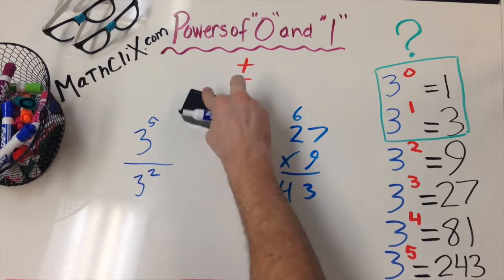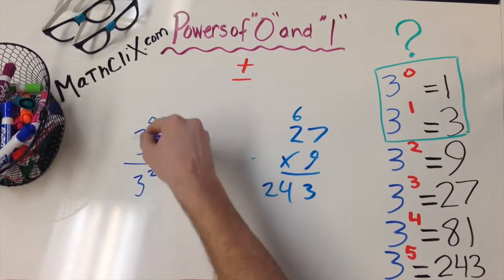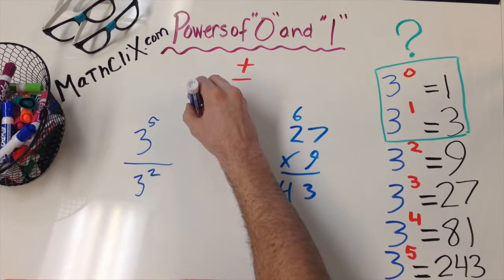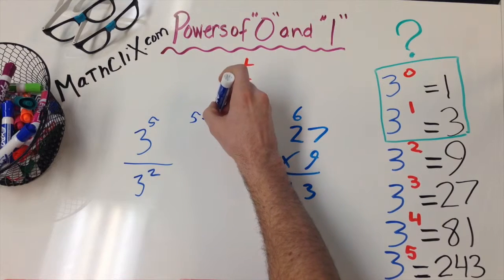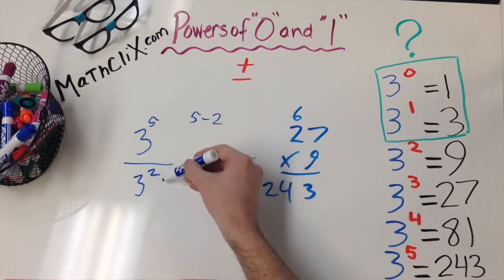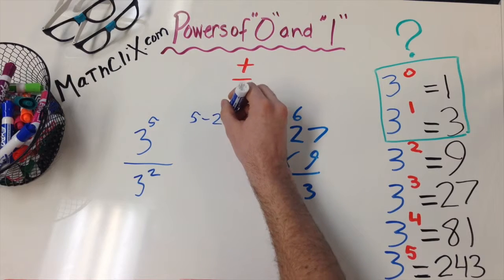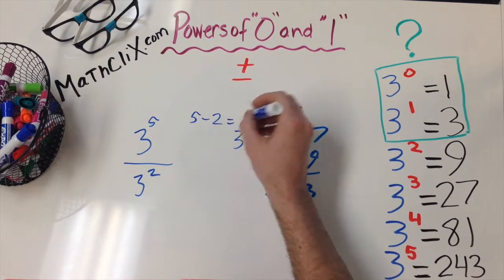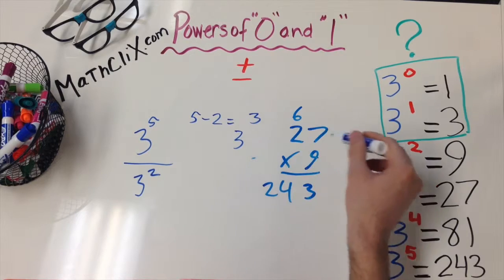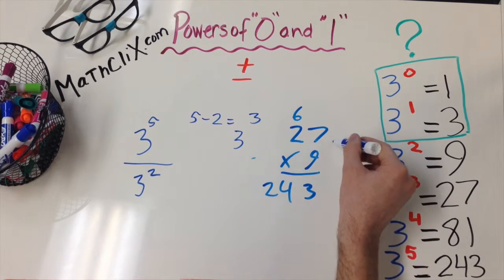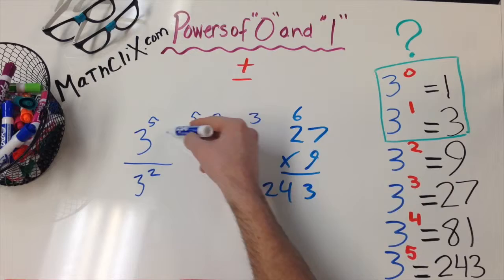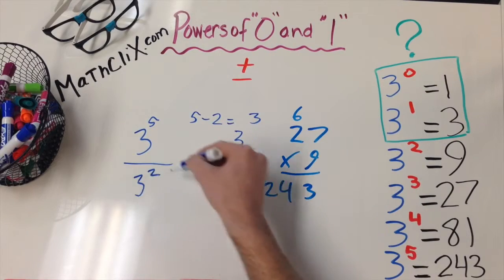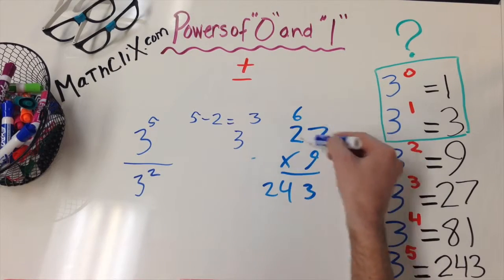So, when you divide similar bases with different exponents, you subtract the exponents, you subtract the bottom from the top, and that equals the power that the base will be raised to to get your answer. 243 divided by 9 equals 27.